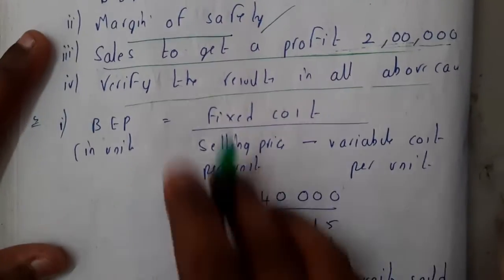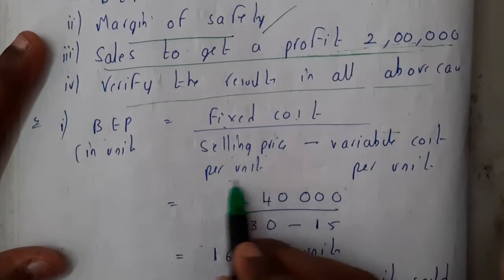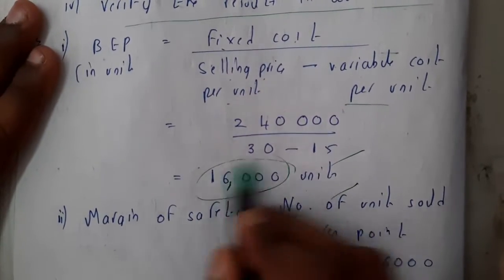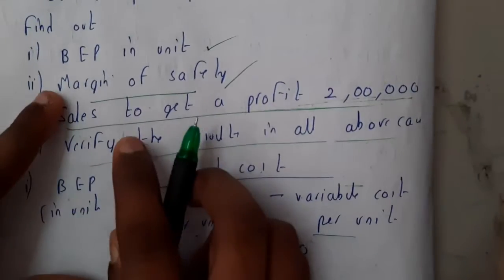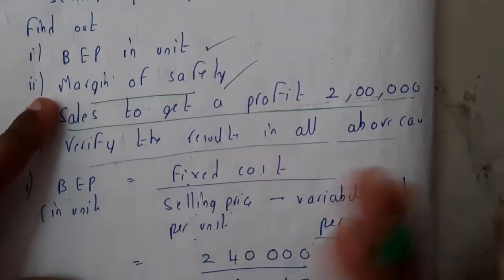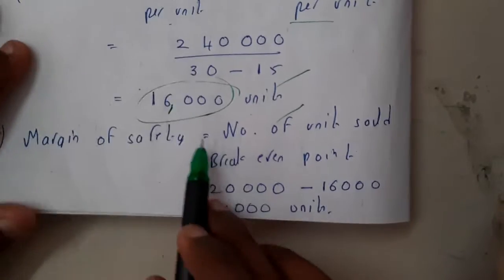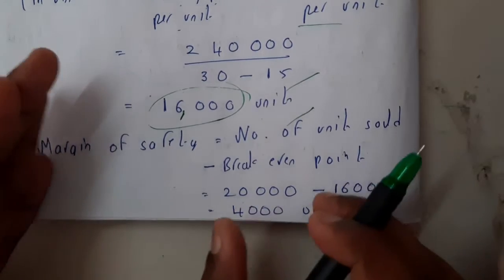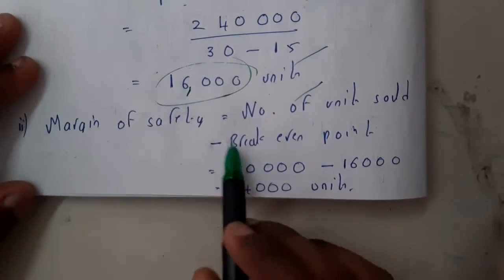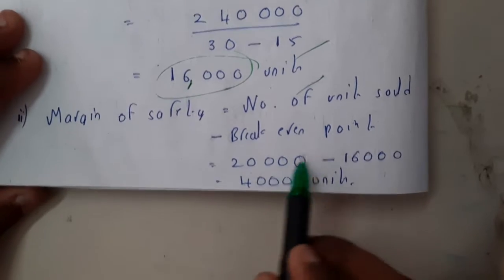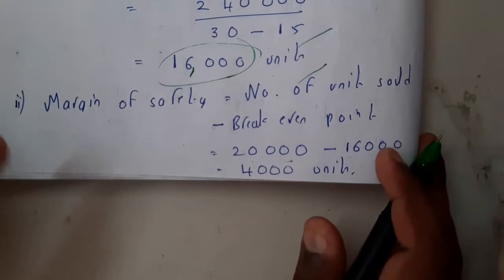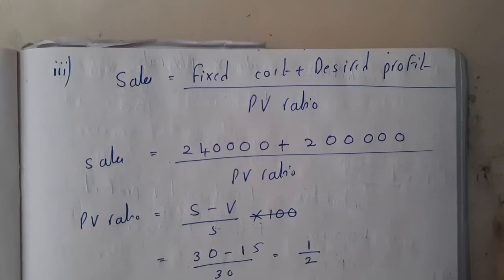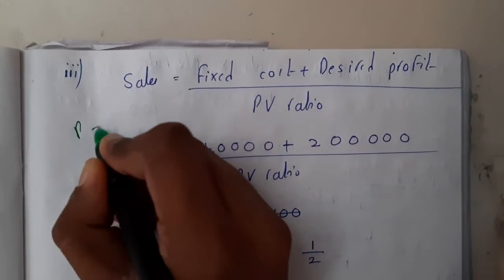For BEP in units: fixed cost divided by (selling price per unit minus variable cost per unit) gives us 16,000 units. Margin of safety means units remaining after reaching BEP. Margin of safety = units sold minus BEP = 20,000 minus 16,000 = 4,000 units. If you sell those 4,000 units beyond BEP, you will make a profit.